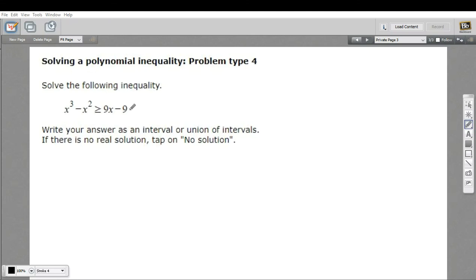Here we have a difficult-looking polynomial inequality, and we want to solve it. When you solve a polynomial inequality, you're going to find some intervals where, in this case, x cubed minus x squared is greater than 9x minus 9.